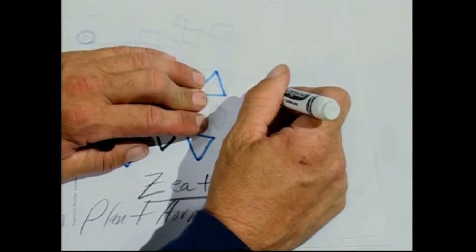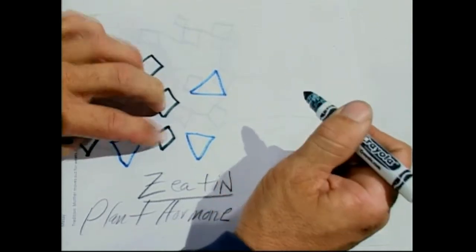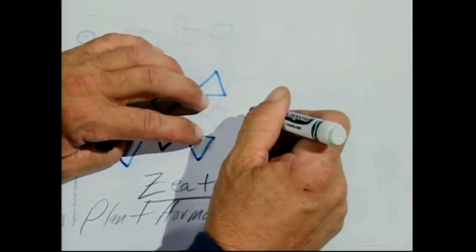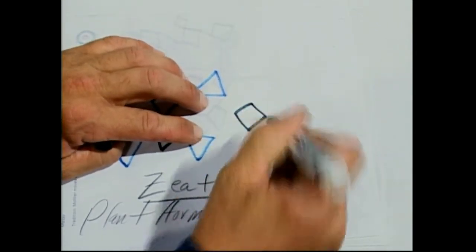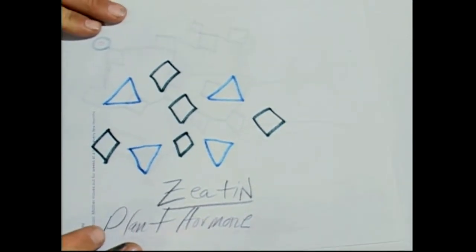5-member ring here gives us 2 already. Don't double draw like I did before. That's the nucleic acid ring right there.